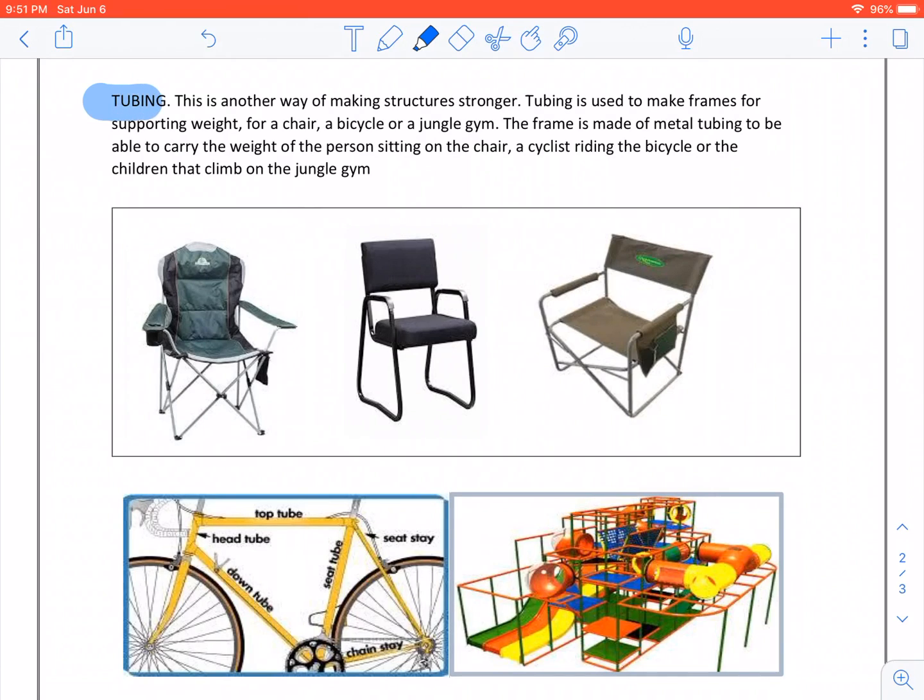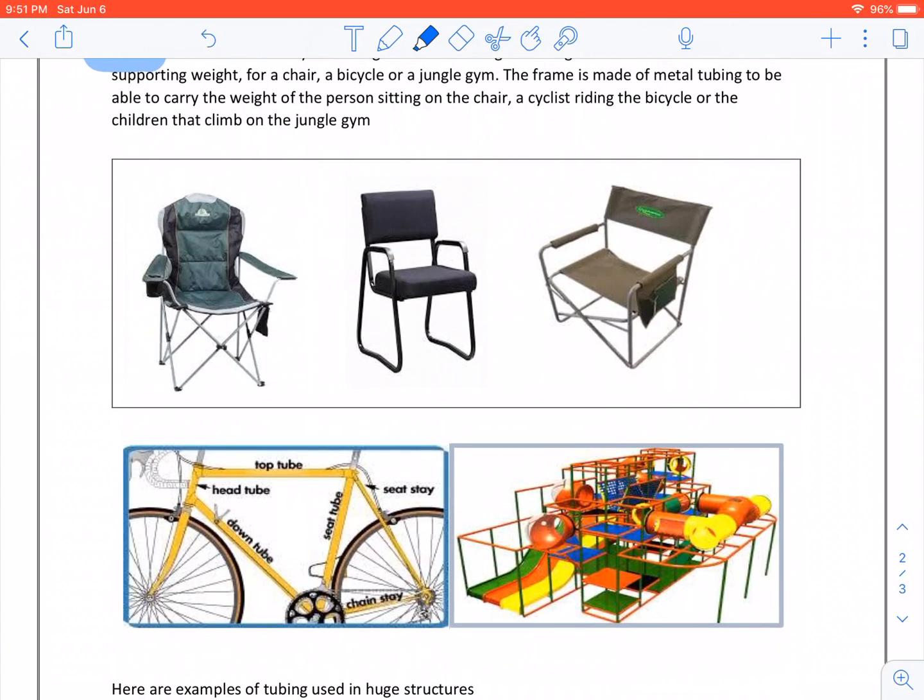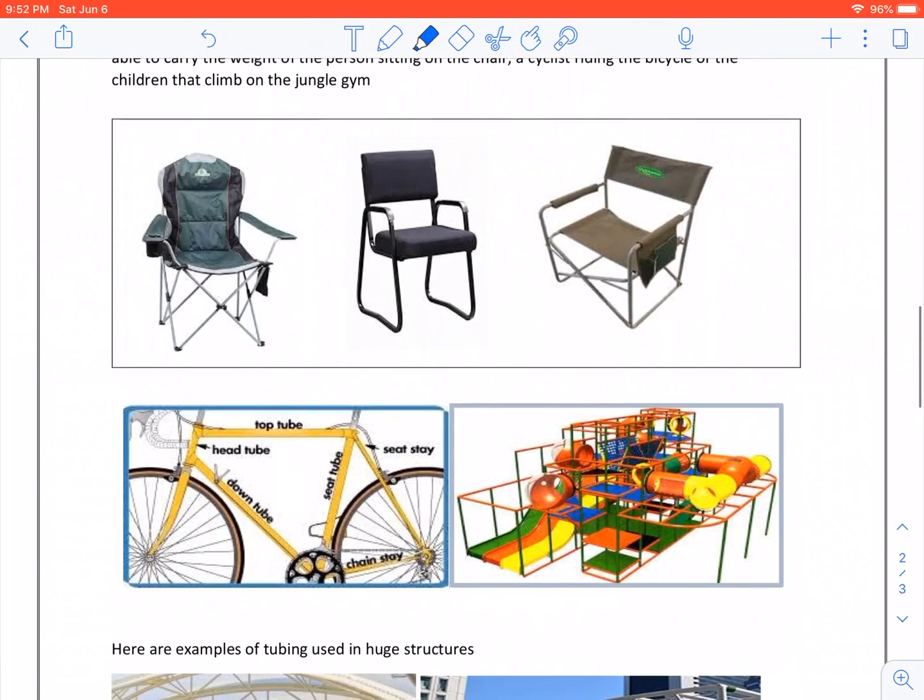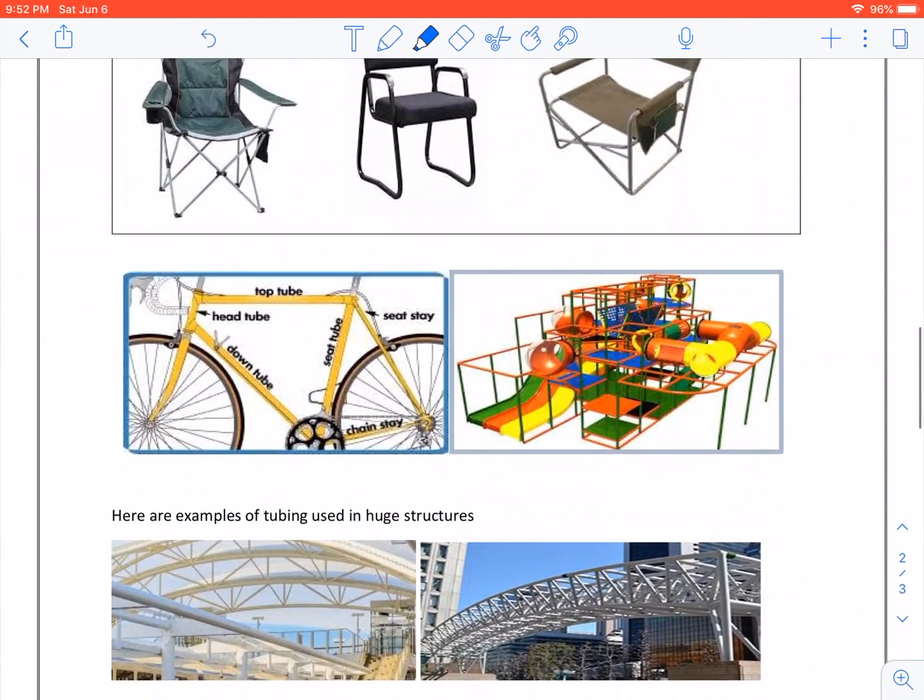Tubing. This is another way of making structures stronger. Tubing is used to make frames for supporting weight for a chair, a bicycle, or a jungle gym. The frame is made of metal tubing to be able to carry the weight of the person sitting on the chair, a cyclist riding a bicycle, or children that climb a jungle gym.